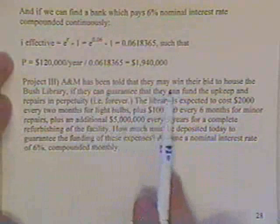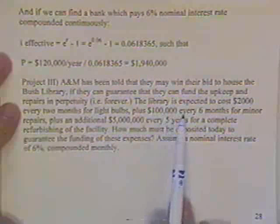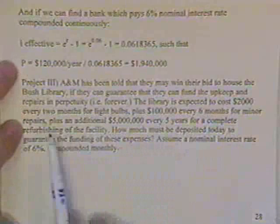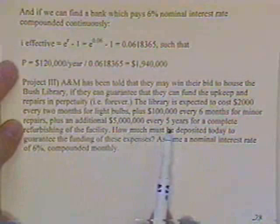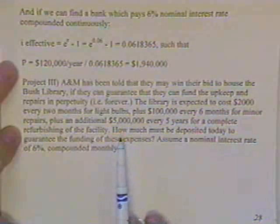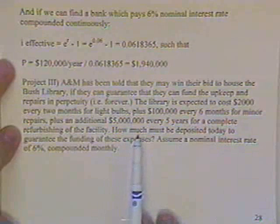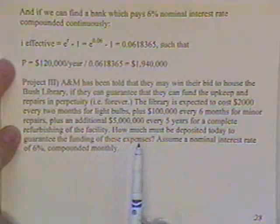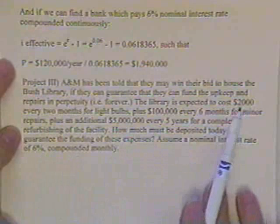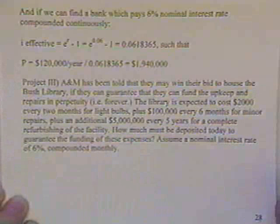All right, here's Project 3. A&M has been told that they may win the bid to house the Bush Library if they can guarantee they can fund the upkeep and repairs in perpetuity. What they expect is $2,000 every two months, you're going to need light bulbs, $100,000 every six months, you're going to need minor repairs, and $5 million every five years, you're going to have to completely refurbish the facility. The government says we may decide you're the winner, but you're going to have to go put the money in the bank right now so we don't find out later that the Bush Library turns into a trash heap and you can't afford to fix it up. Put it in the bank now. We need to know how much we have to deposit today to guarantee the funding of these expenses forever, and I'm going to assume a nominal interest rate of 6% compounded monthly.